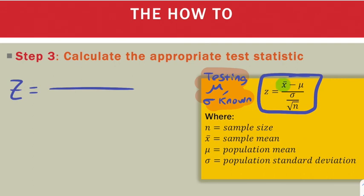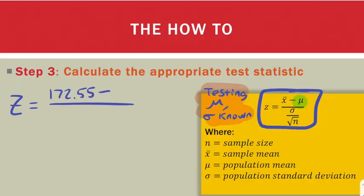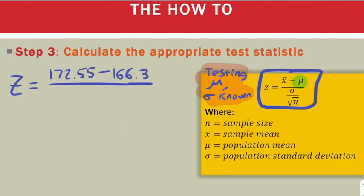The first is x-bar, which is our sample mean. Going back to the original problem, the sample mean was 172.55. Next we need the mu, which we can find from our hypotheses. It's 166.3. So now I have the first two parts of this formula.